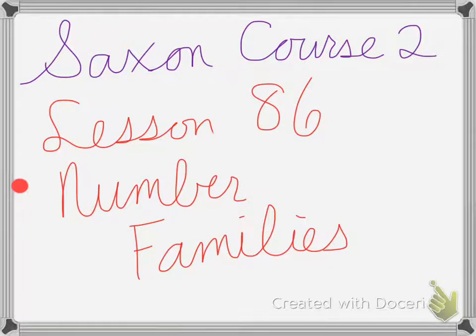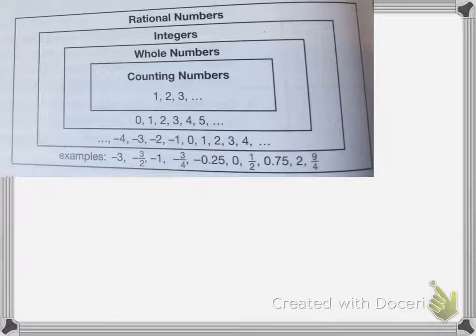Saxon Course 2 Lesson 86 is on number families. Here we have all the different number families. Starting with the biggest, we have rational numbers.